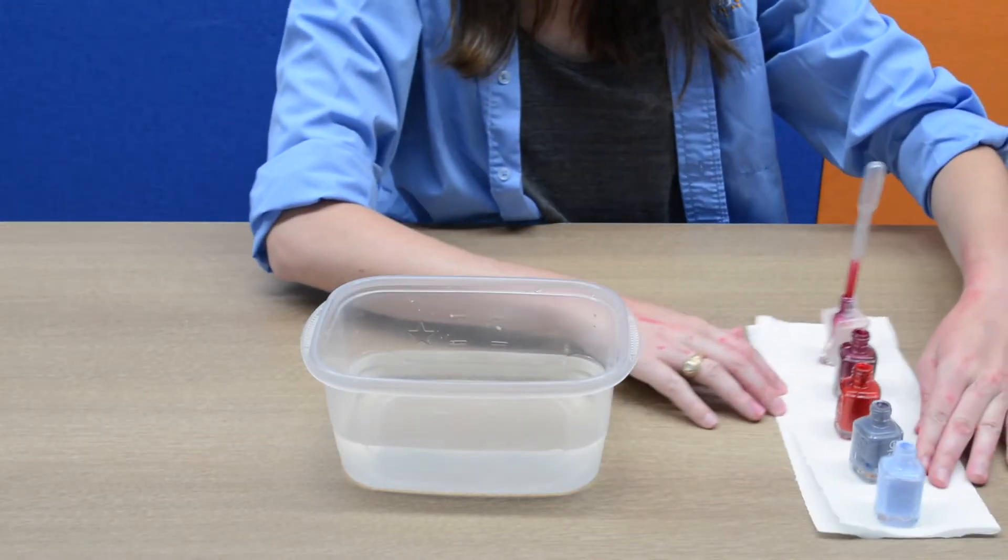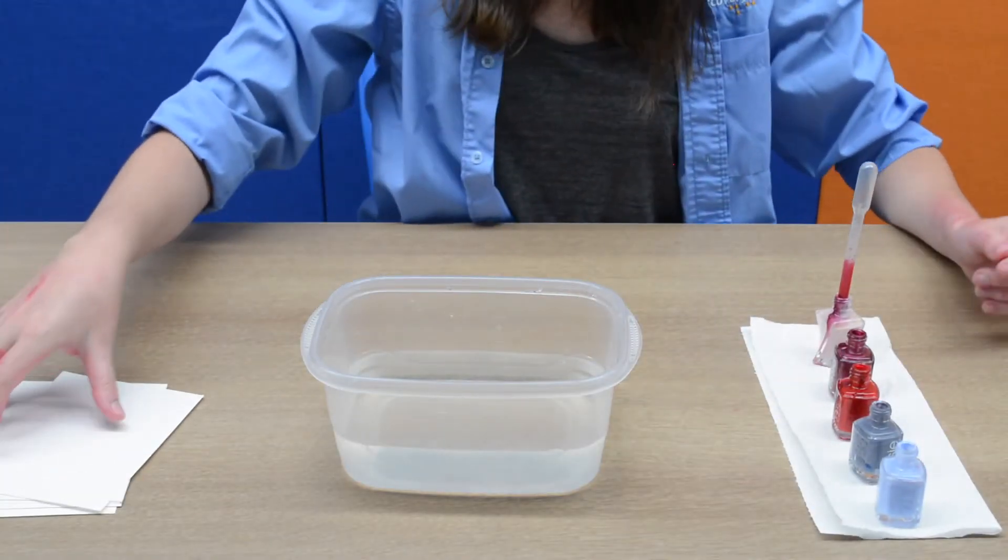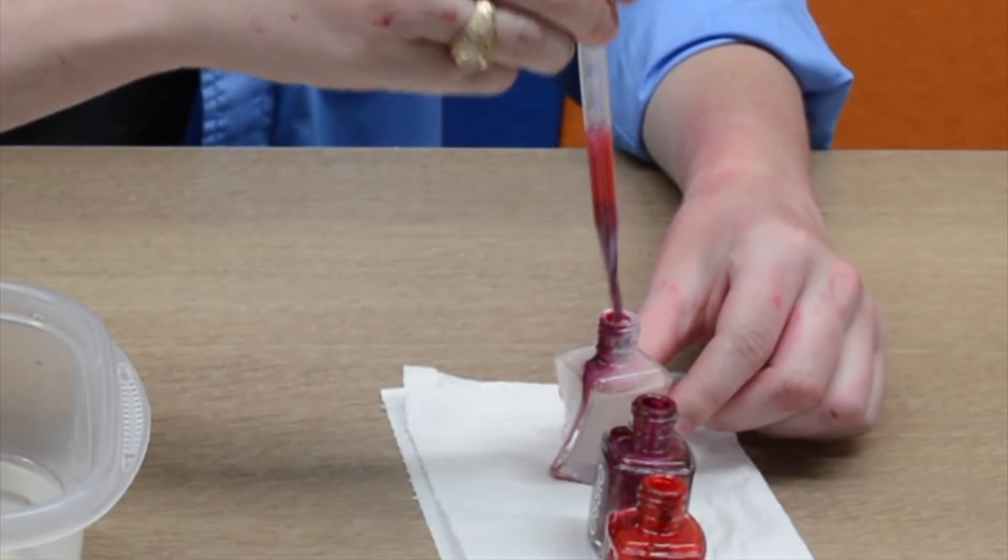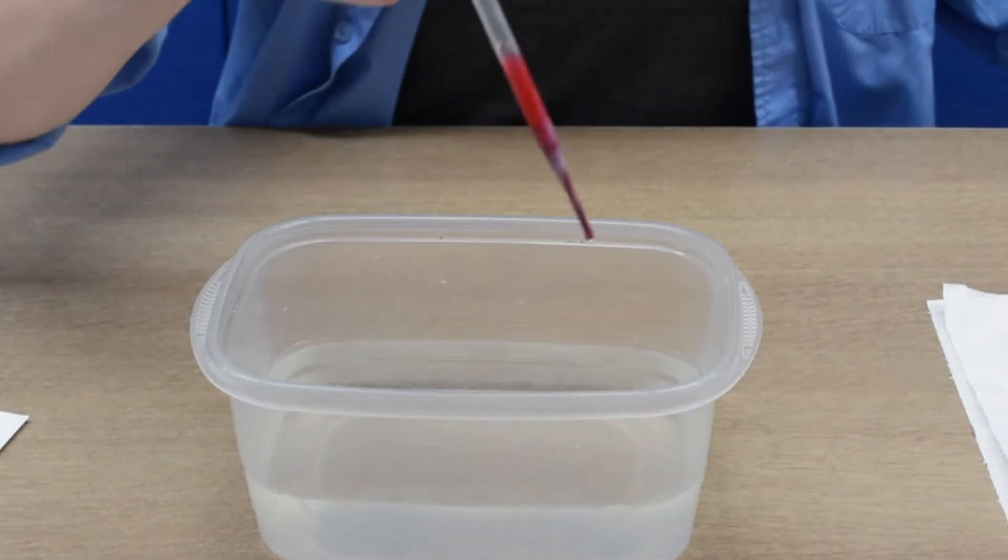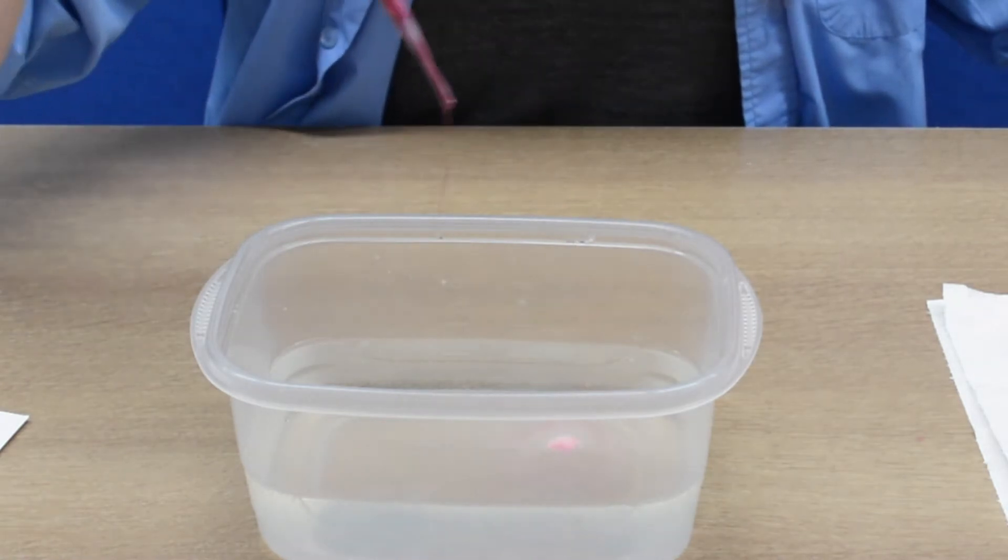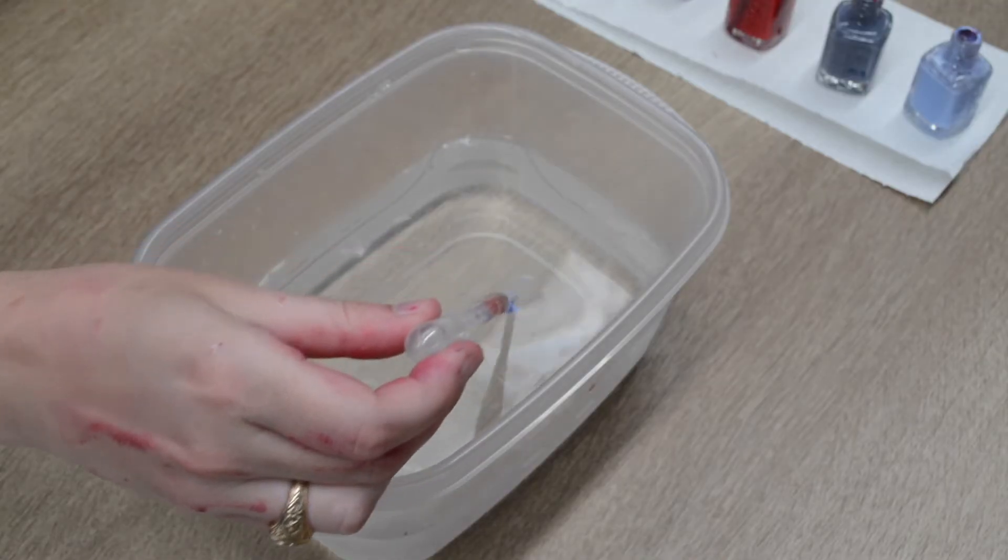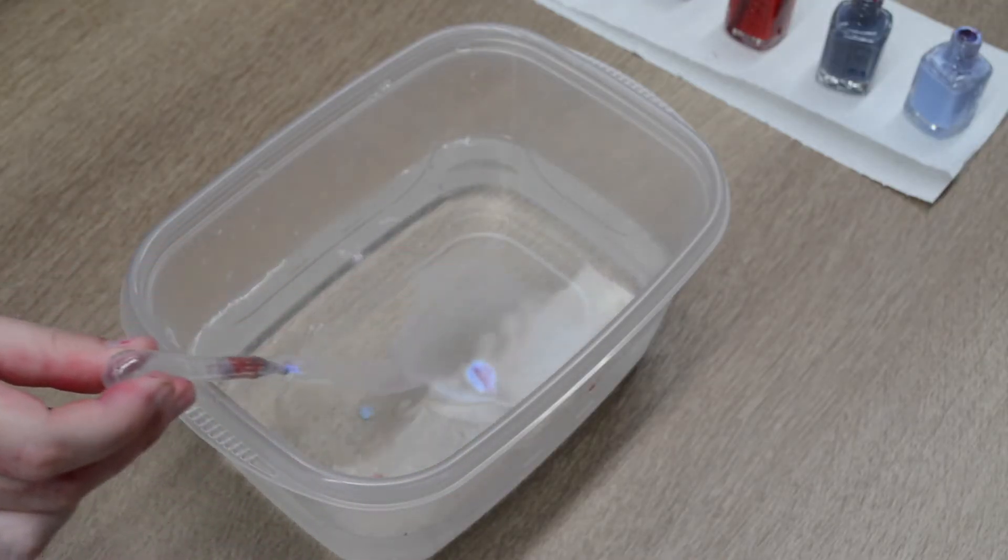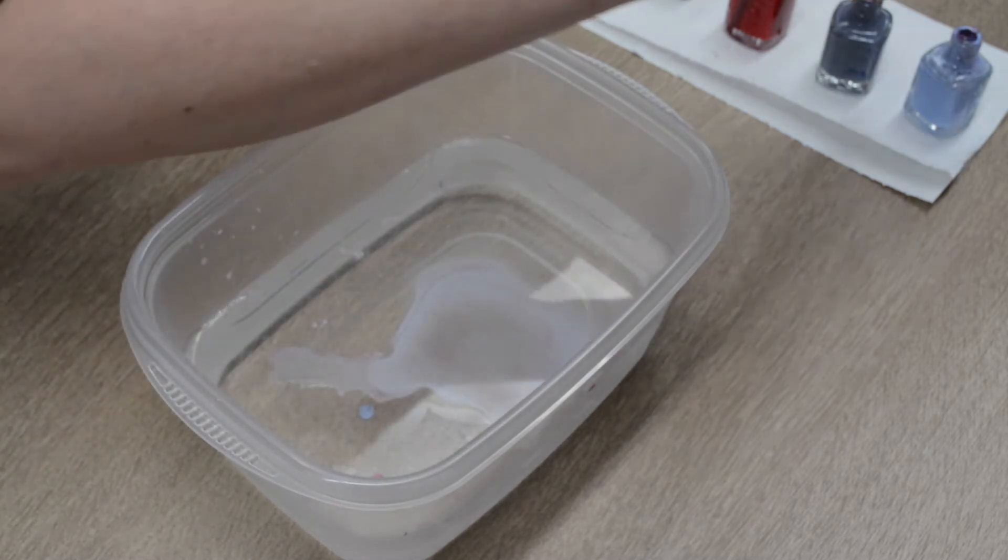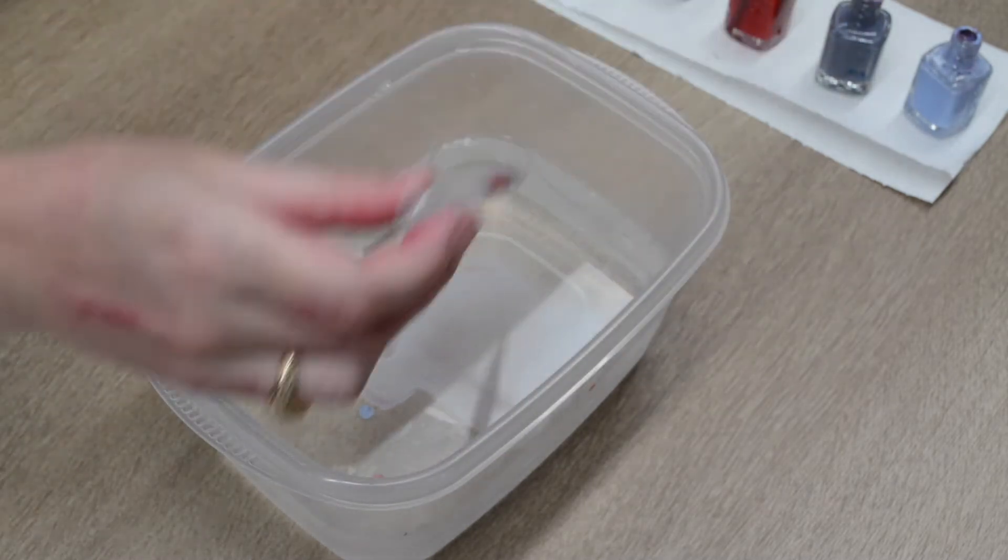First thing you want to do is open the lids of your nail polishes and use the pipette to soak up some nail polish from one of the bottles. Squeeze out that polish near the surface of the water. You will see the polish floats on top of the water. Repeat this step to add as many colors as you want from the other nail polish bottles.